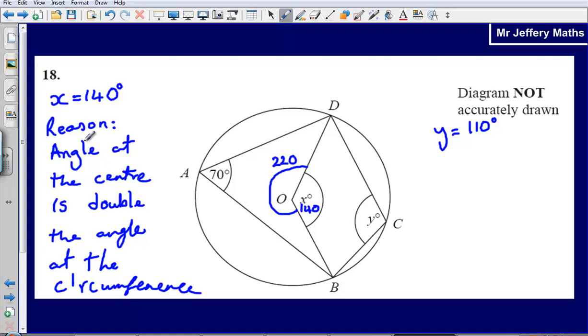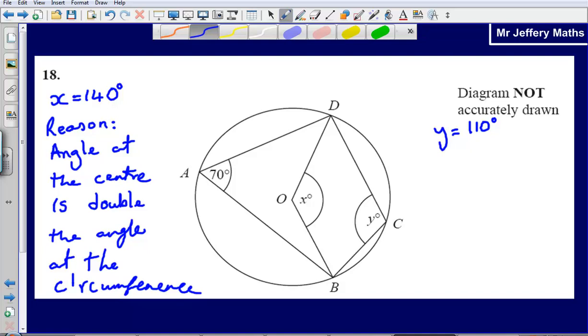We could write exactly the same reason for our reason for y as well. But we'll take a look at another reason why it's 110 degrees. The other reason that it's going to be 110 degrees is because this angle here is 70 degrees, and what we've got is what we call a cyclic quadrilateral.